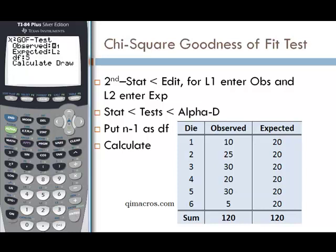By default, our observed values are in L1, and that's where we put them. Our expected values are in L2, and that's where we put them. It gives us a degree of freedom of 5. Since we had 6 values, that is n-1 for our case, and that's what we want. Highlight calculate and press enter.